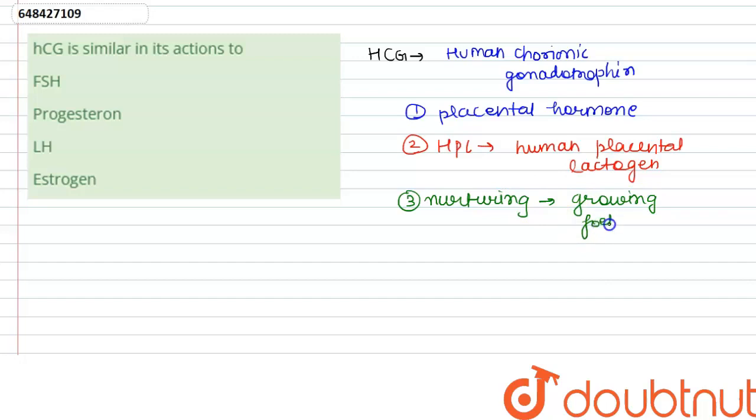It is said that hCG and LH, that is the luteinizing hormone, they both have the same receptor. They both have same receptors. So we can say that hCG is similar to a hormone which is LH, luteinizing hormone.